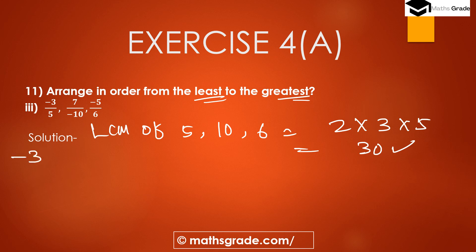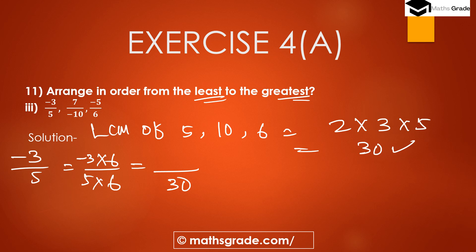Convert −3/5 into an equivalent rational number. Multiply denominator 5 by 6 to get 30. Multiply numerator −3 by 6: −3 × 6 = −18. So −18/30 is the equivalent rational number of −3/5.